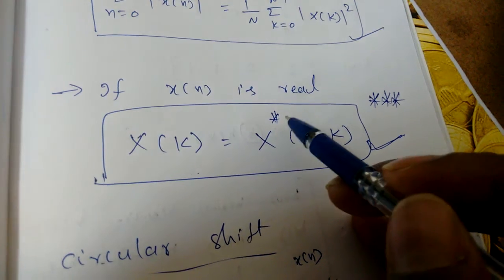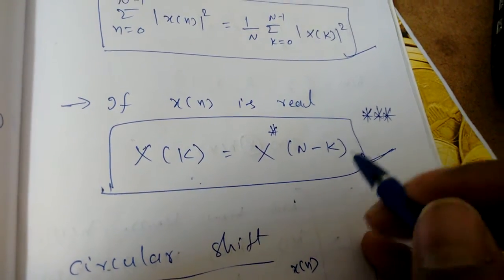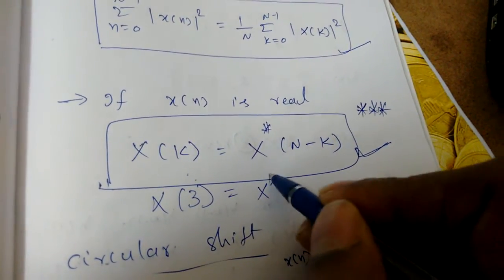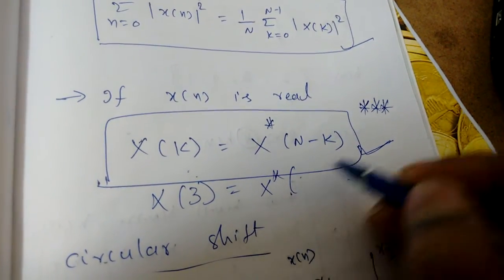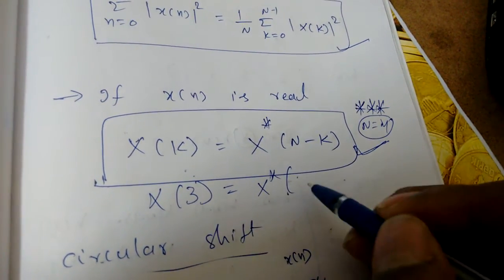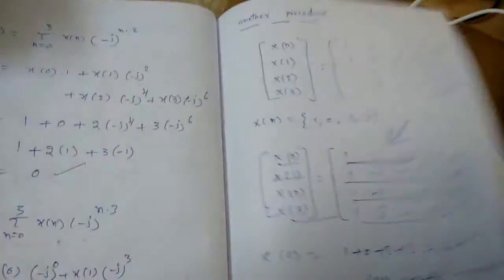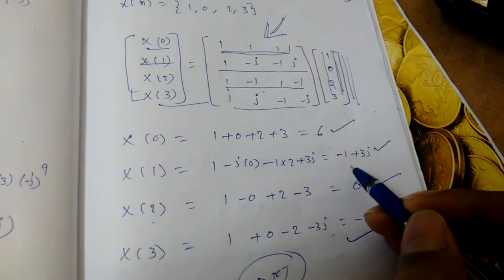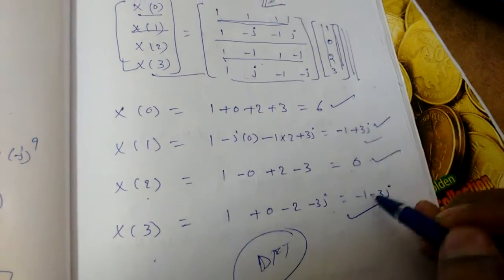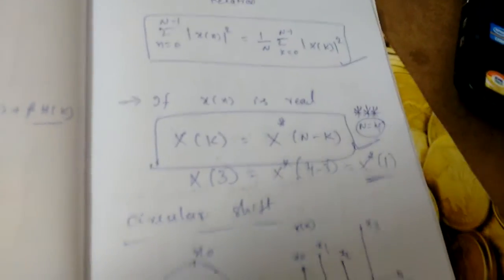A very important property: if x(n) is real, then X(K) = X*(N - K). This is conjugate symmetry. For example, to find X(3) when N=4, compute X*(4 - 3) = X*(1). From a previous problem, X(1) = -1 + 3j, so X(3) = -1 - 3j, which is the conjugate of X(1).